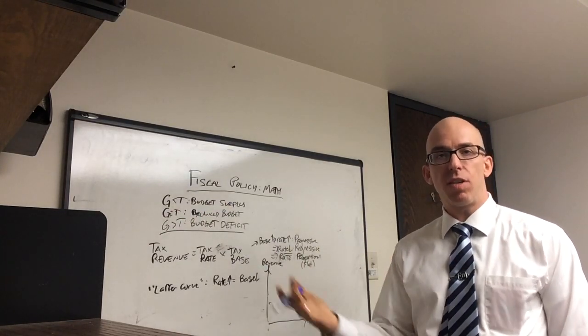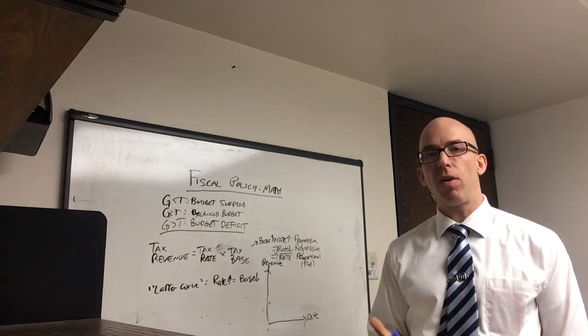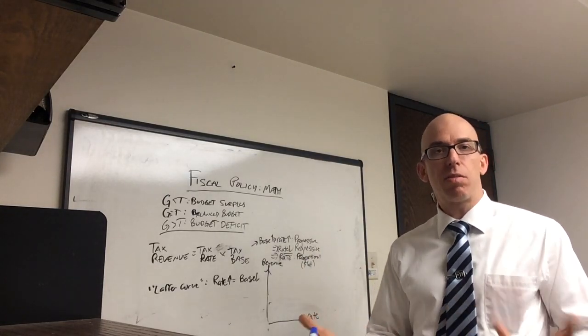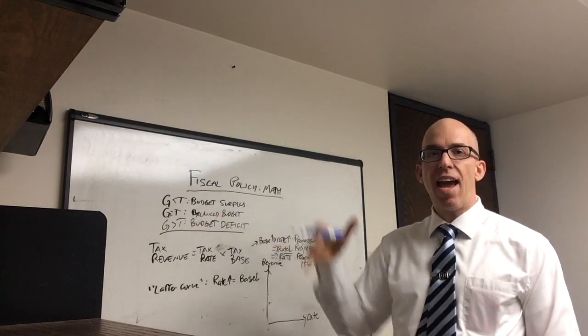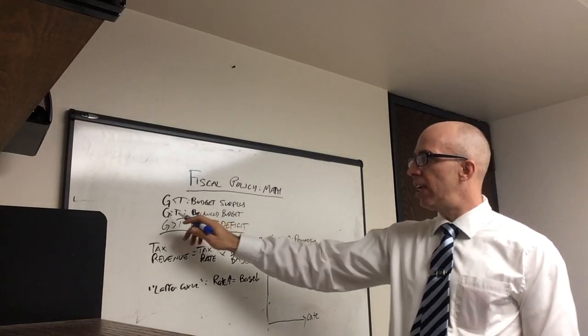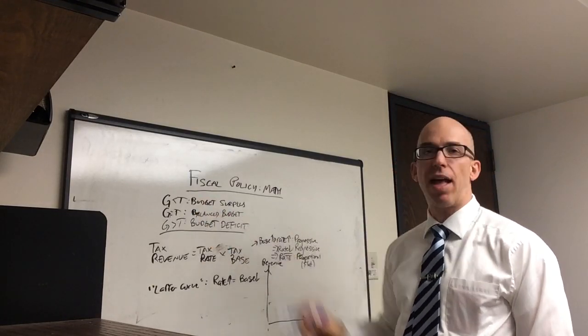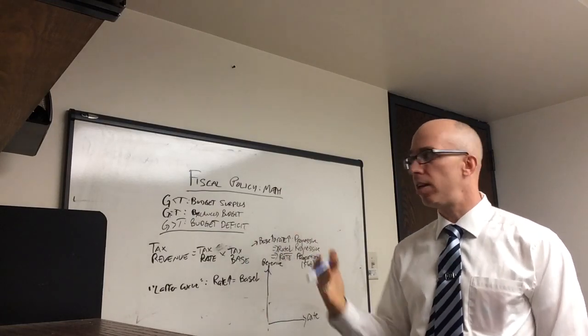Regardless of why countries or governments tax, you could talk about promoting equality or reducing bad behavior like smoking or cigarette taxes. But if you're simply looking at raising revenue, you could say that tax revenue T will fund government spending G. So if they're equal, G equals T, you'll have a balanced budget, that there's enough money coming in through taxes to pay for government expenditure.